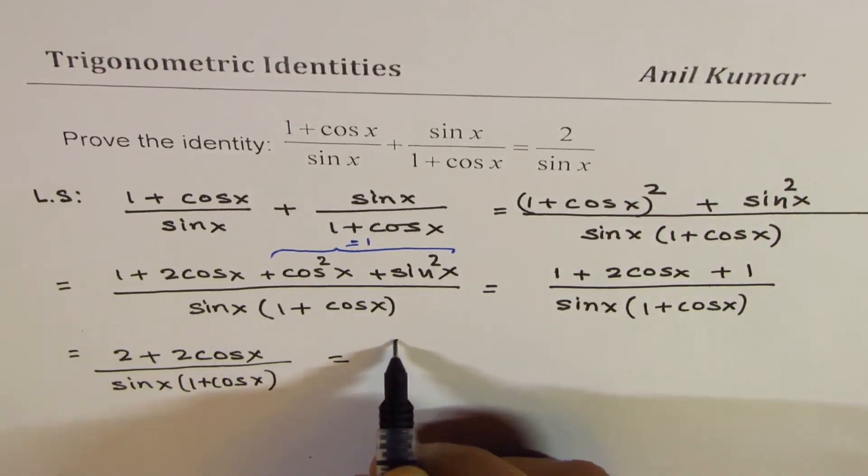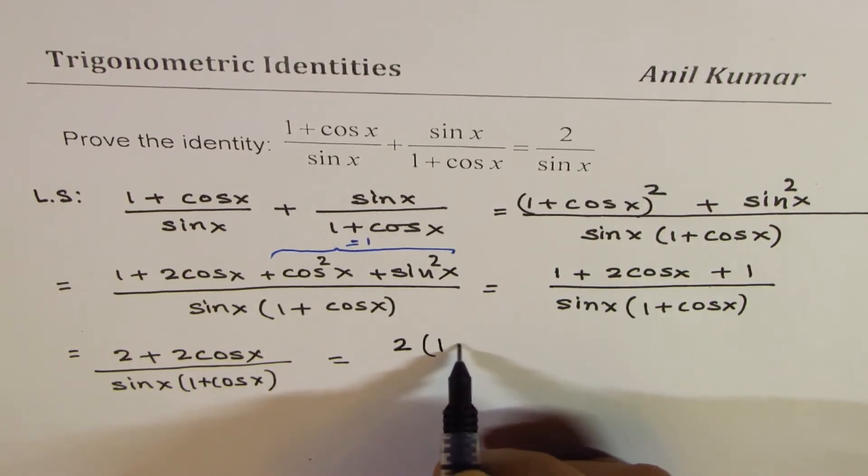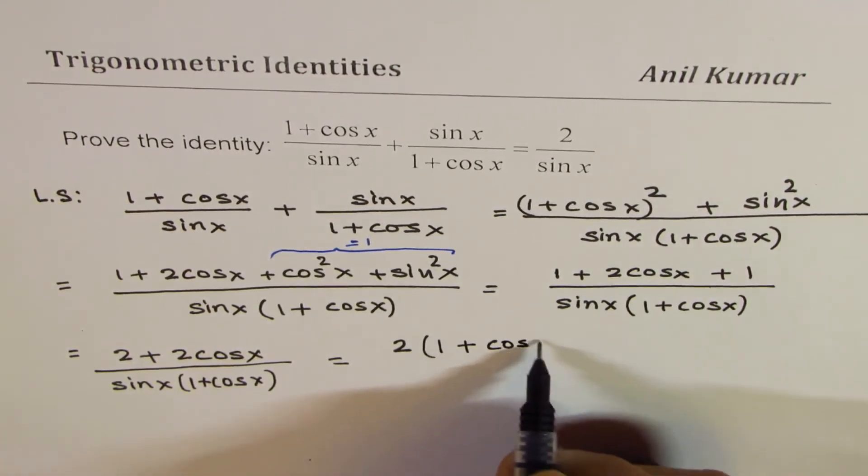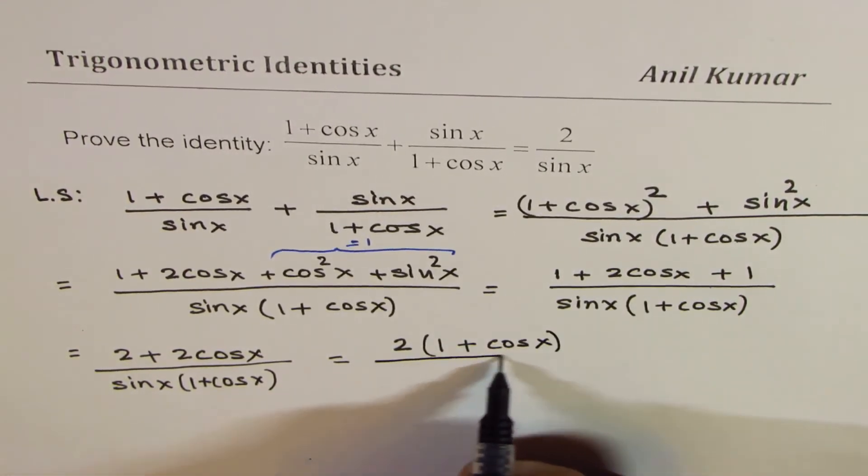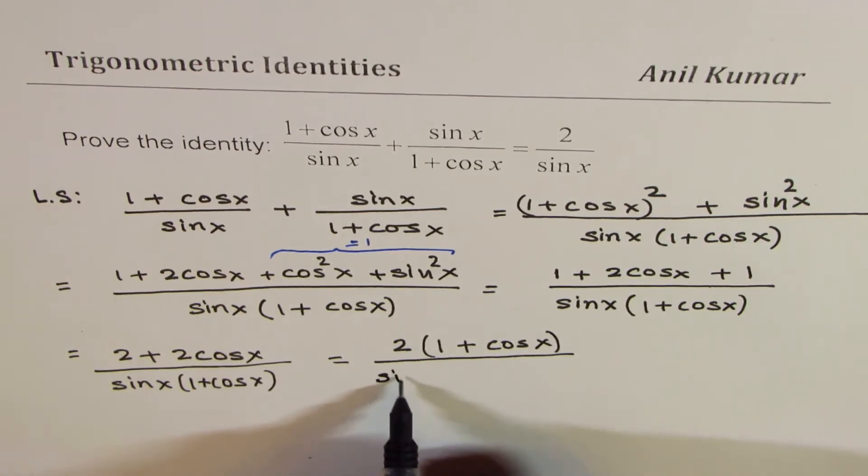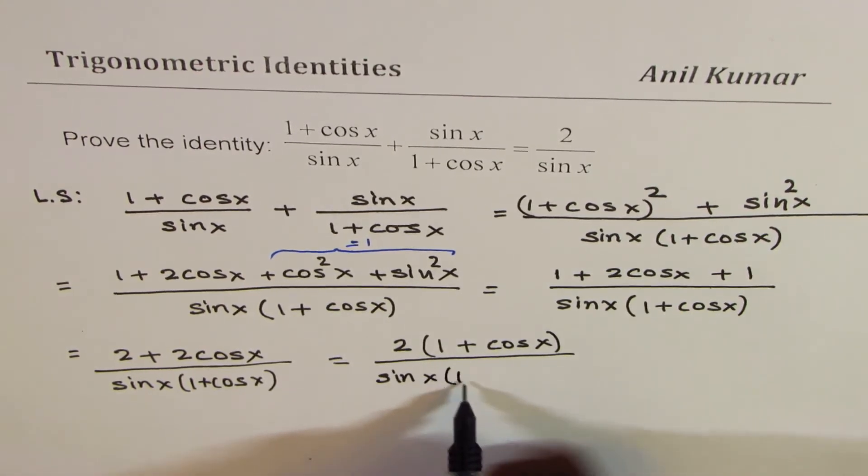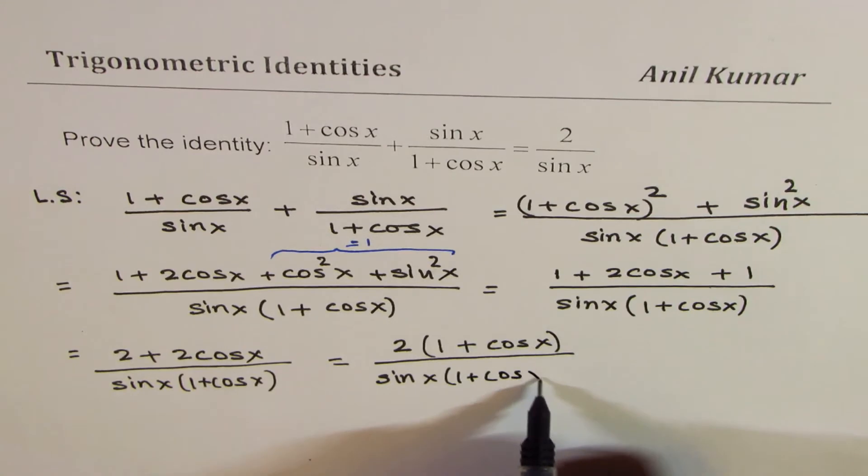Now, you can take 2 common, and so you get 1 plus cos x as a factor in numerator. We already have this factor in denominator also. 1 plus cos x can now be cancelled.